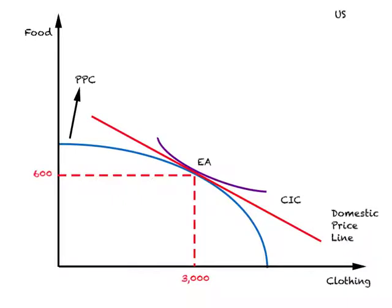Suppose we are looking at a country called the U.S., which produces two goods, clothing and food, and the blue curve is the PPC. The slope of this PPC continues to increase in absolute terms, which is what we mean by the increasing cost PPC. We are also given a domestic price line represented by the red colored line, and a community indifference curve for the U.S.